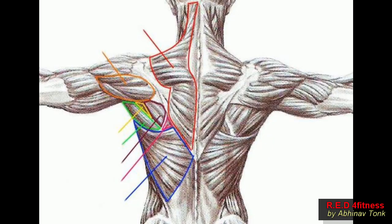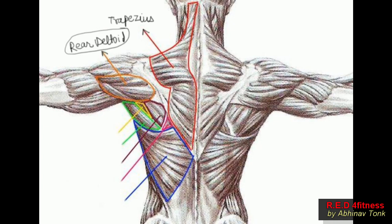Now let me explain the anatomy and classification using a diagram. This is the anatomy of back muscles where different muscles are labeled. The first one labeled in red at the top is the trapezius muscle. The orange part is the rear deltoid — we don't train it as part of back muscle; it's part of shoulder muscles. I've labeled it on purpose to show that although it looks like a back muscle, we train it as part of shoulder muscles. The yellow highlighted part is teres minor muscle.